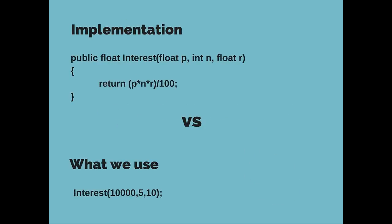Here you have a code snippet showing how abstraction is implemented in a program that calculates simple interest. You have a function called interest which takes in the parameters p (principal), n (number of years), and r (rate of interest). It multiplies them and divides by 100 to calculate the interest value and returns it. But all you see in the main program is the function call along with the values of the parameters that are passed.